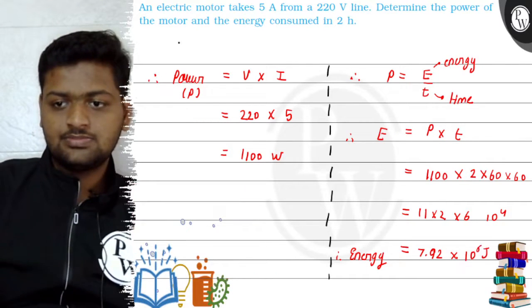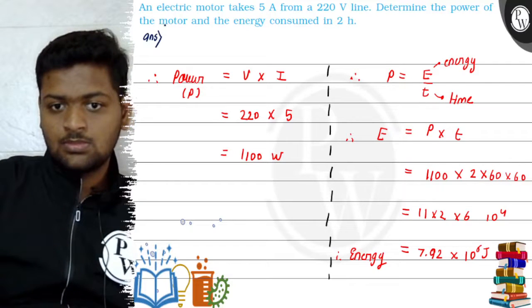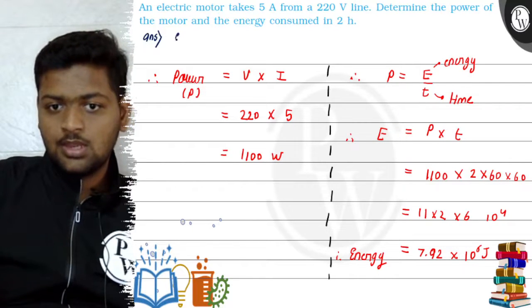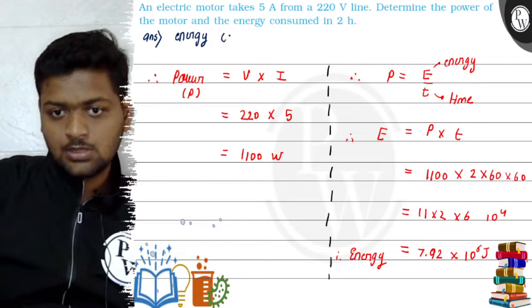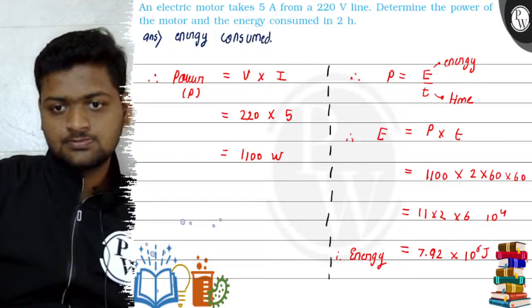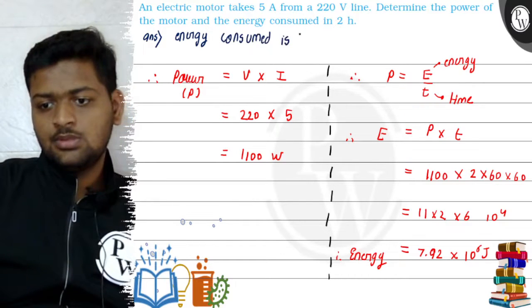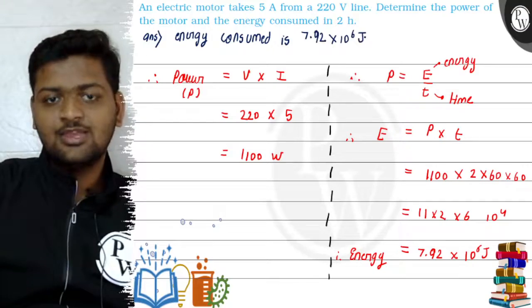We write our final answer: energy is 7.92 × 10⁶ joules. Thank you.